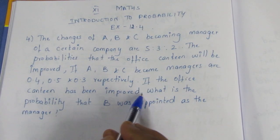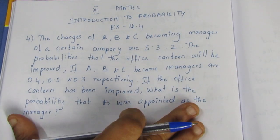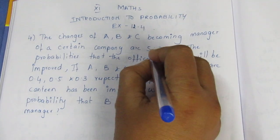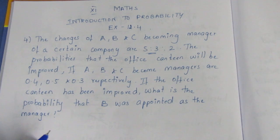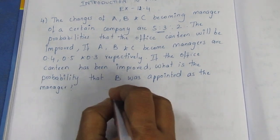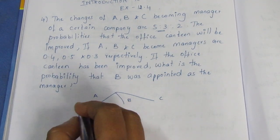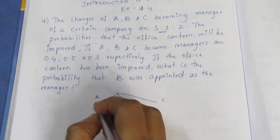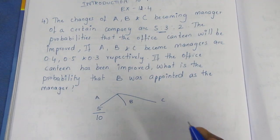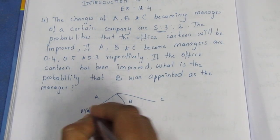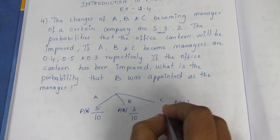If the office canteen has been improved, what is the probability that B was appointed as the manager? Since we have a ratio 5:3:2, we convert to probabilities. The probability of A is 5 by 10, probability of B is 3 by 10, and probability of C is 2 by 10.